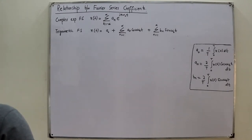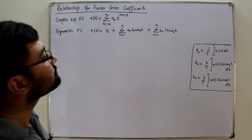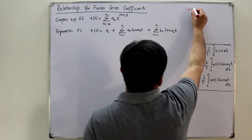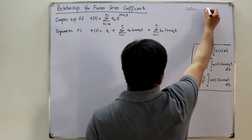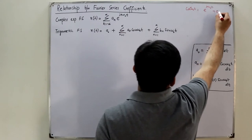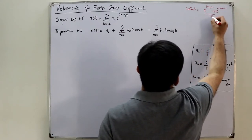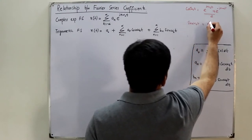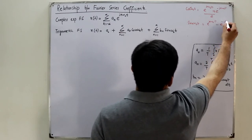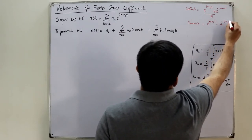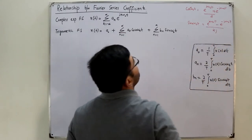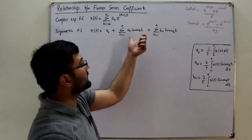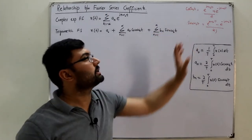You know that cos(n*omega_0*t) = [exponential(j*n*omega_0*t) + exponential(-j*n*omega_0*t)] / 2. Similarly, sin(n*omega_0*t) = [exponential(j*n*omega_0*t) - exponential(-j*n*omega_0*t)] / 2j. I am going to apply these substitutions to the cosine and sine terms in the trigonometric Fourier series.